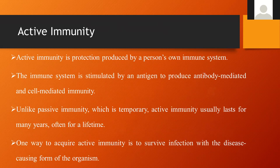A specific class of antibody, IgG, is transported across the placenta primarily during the last one or two months of pregnancy, providing the infant with protection. Active immunity, by contrast, is protection produced by the person's own immune system — not by transferring antibodies from someone else as in passive immunity. In active immunity, the immune system is stimulated by an antigen to produce an antibody-related or cell-mediated immune response.